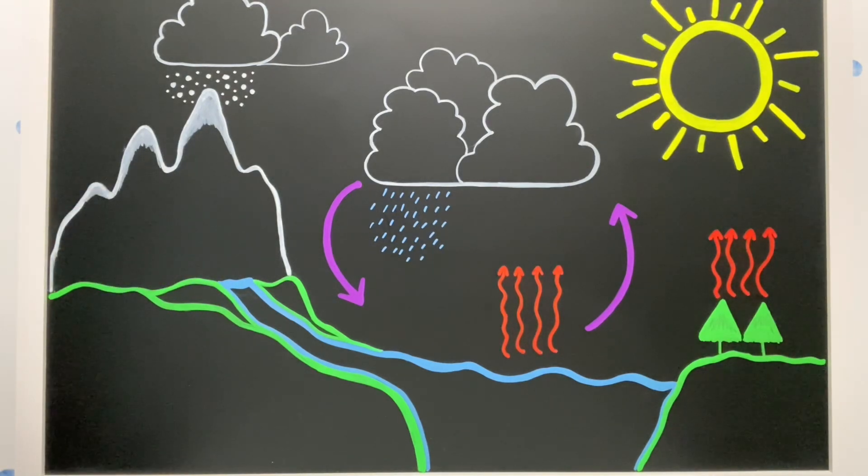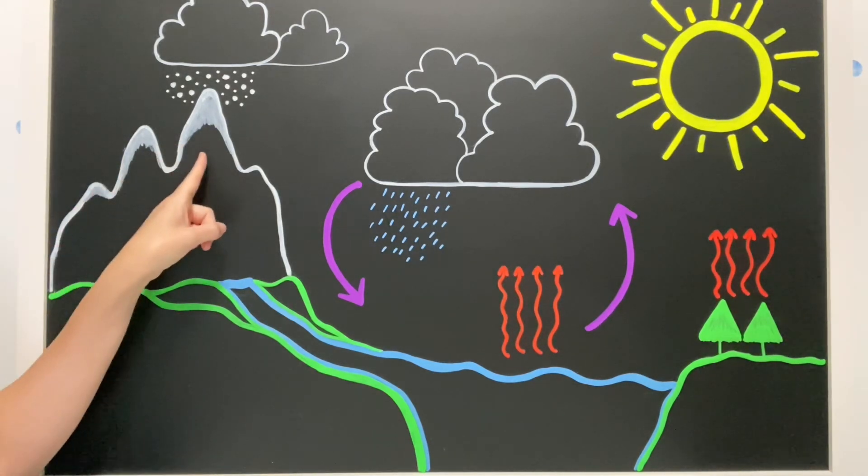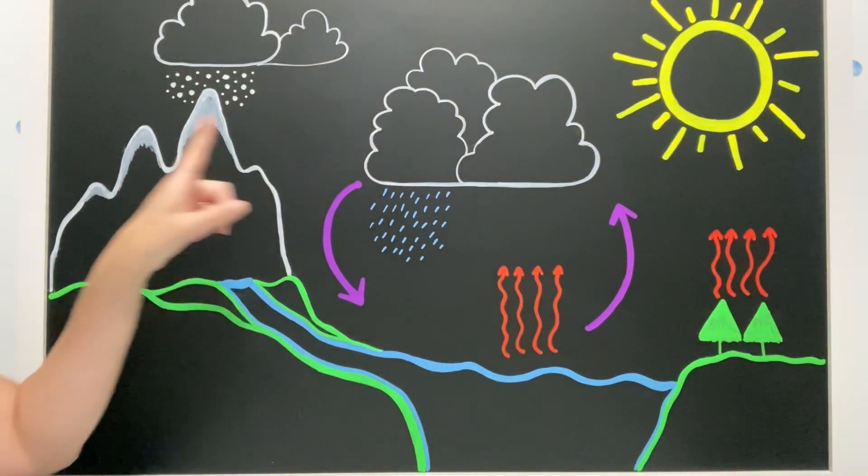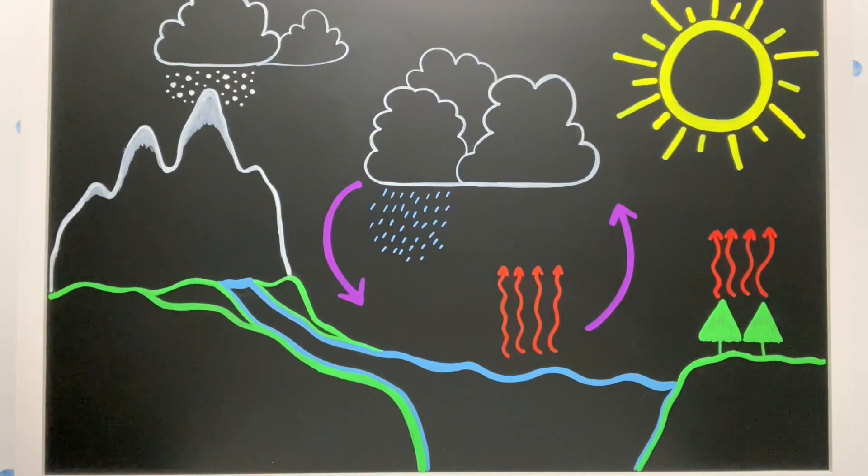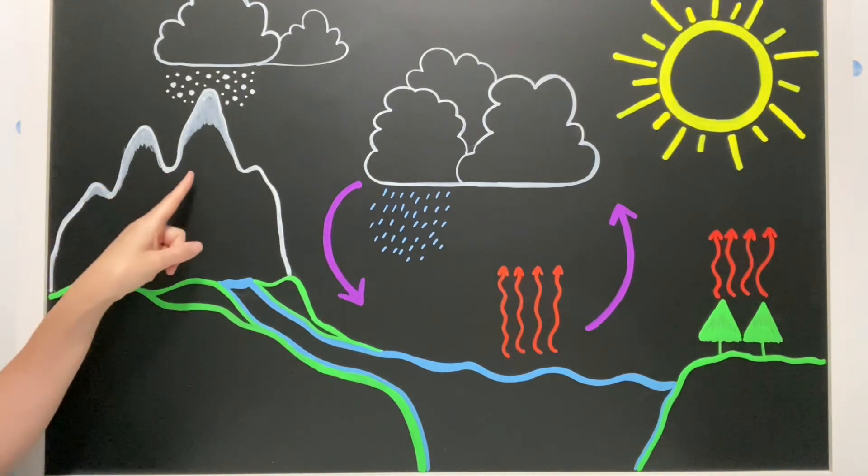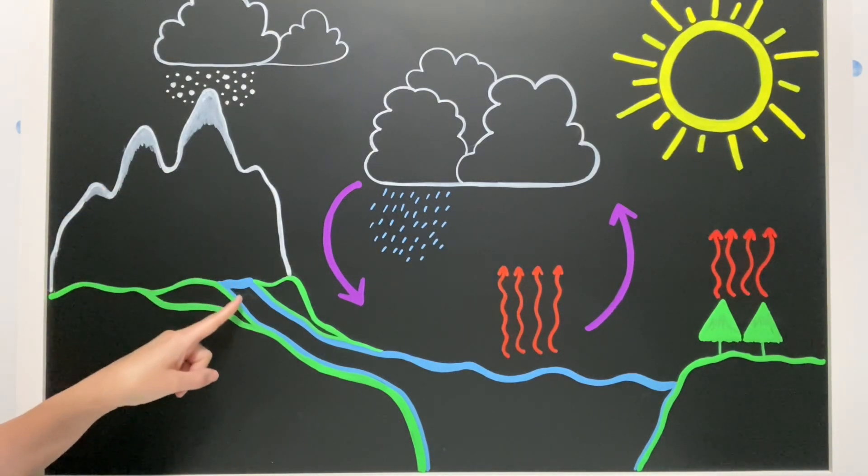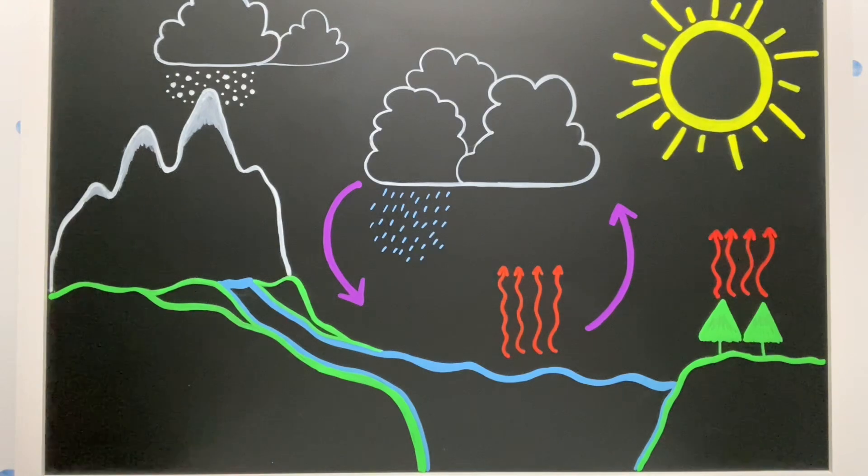There's one other thing I want you to know about. If we have snow up in the mountains and the sun warms up our mountains, what do you think is going to happen to the snow? It's a solid and it warms up. So it's going to turn back into a liquid. And that's called runoff.